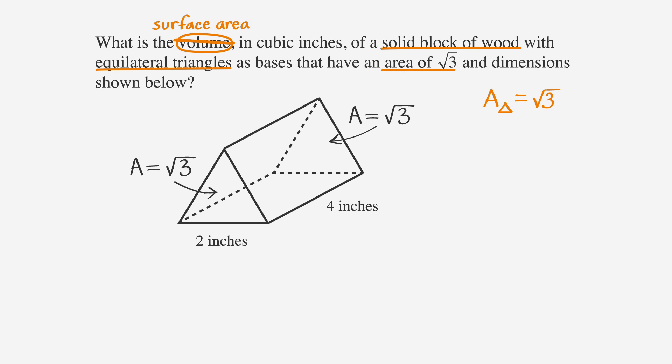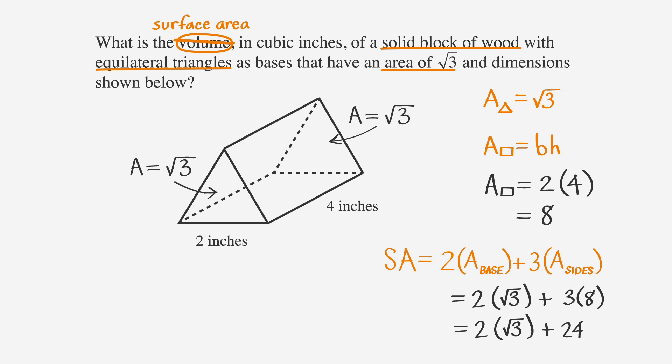The question tells us that the area of each triangular base is the square root of three. To find the area of each rectangle, we multiply base times height, which is two times four, or eight. The total surface area is the area of the bases plus three times the area of the sides, so two times the square root of three plus three times eight. This equals two times the square root of three plus twenty-four.